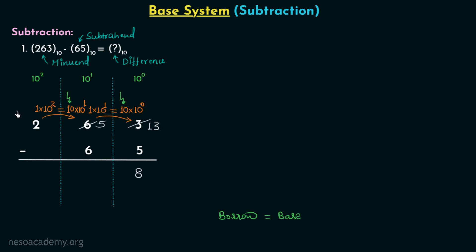Continuing the subtraction: 10 plus 5 equals 15, so in place of 5 we have 15, and in place of 2 we have 1. 15 minus 6 equals 9, and 1 minus 0 equals 1. So 198 in decimal is the answer — the difference of this subtraction.